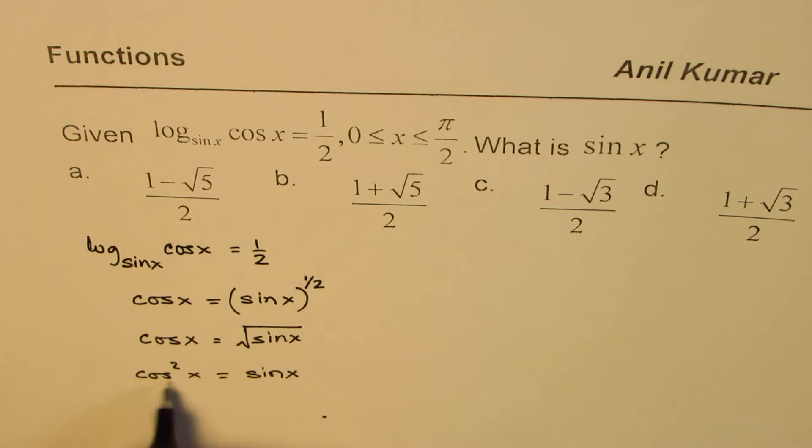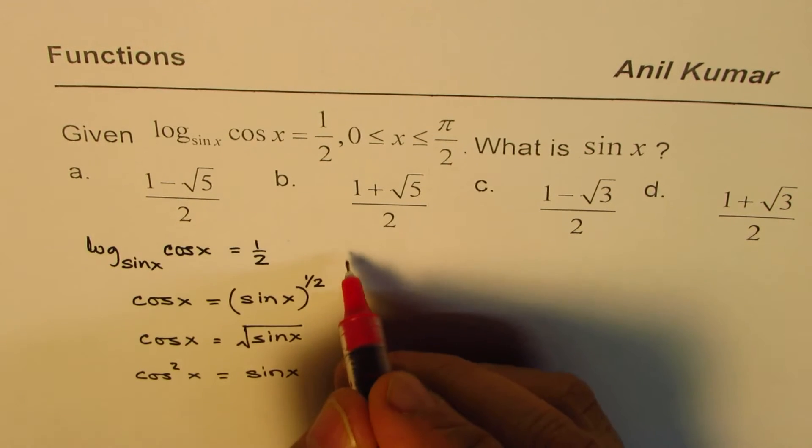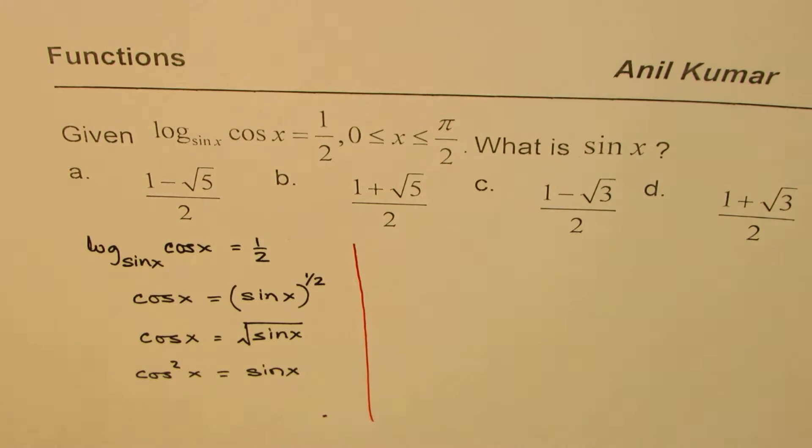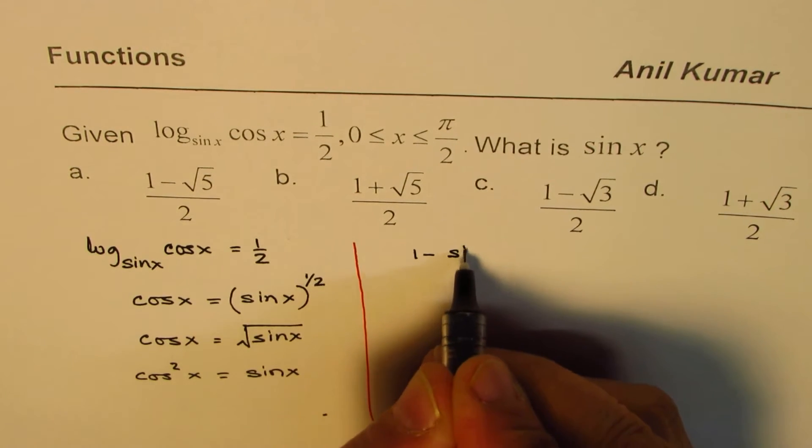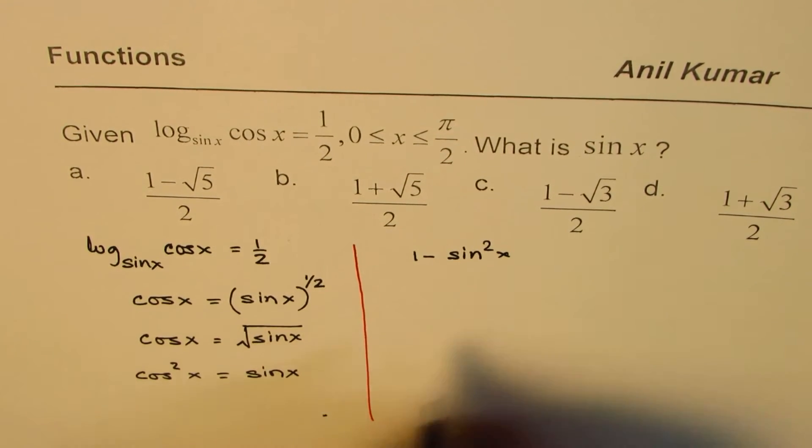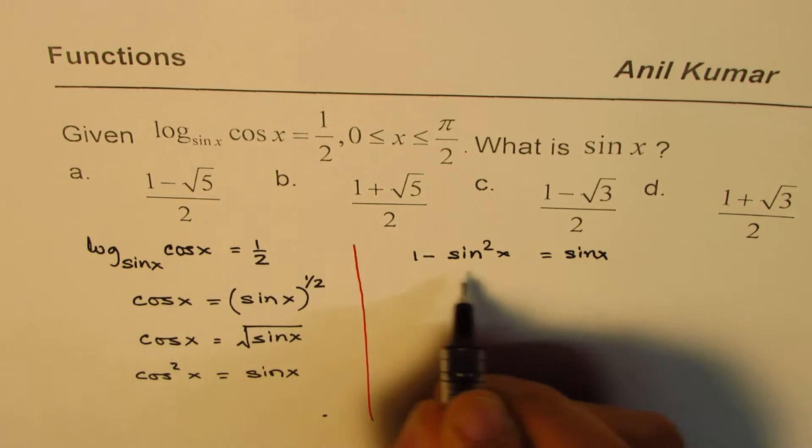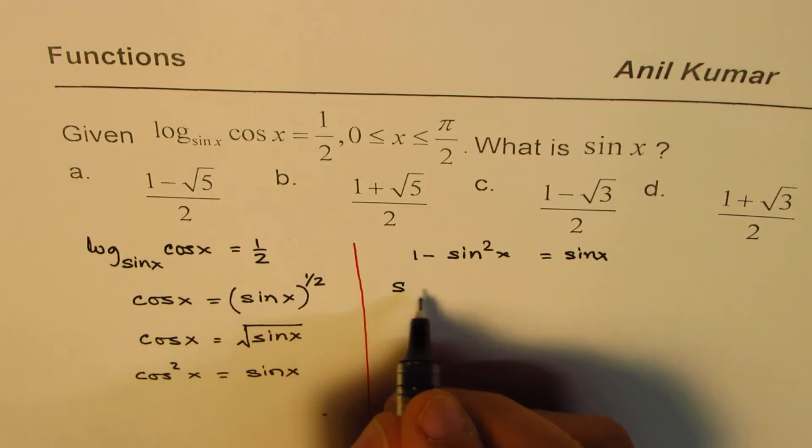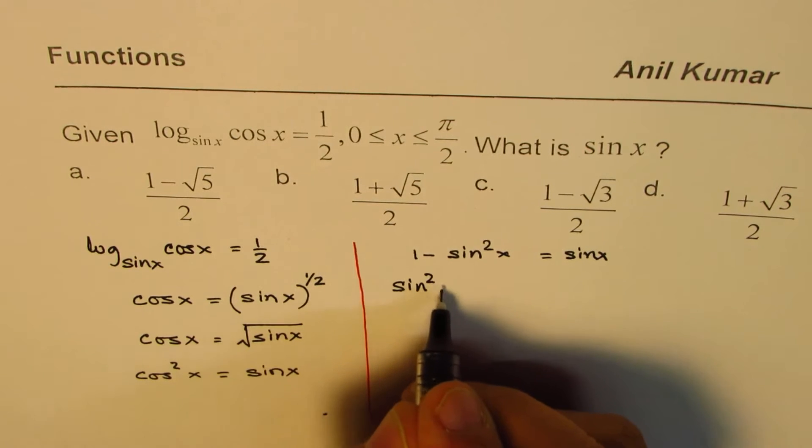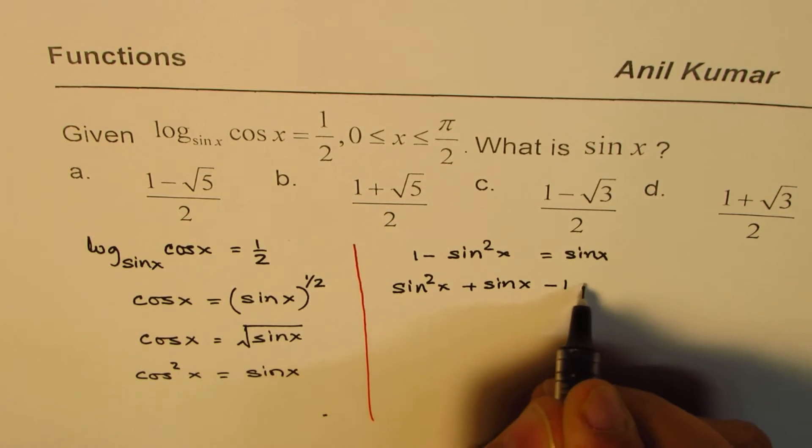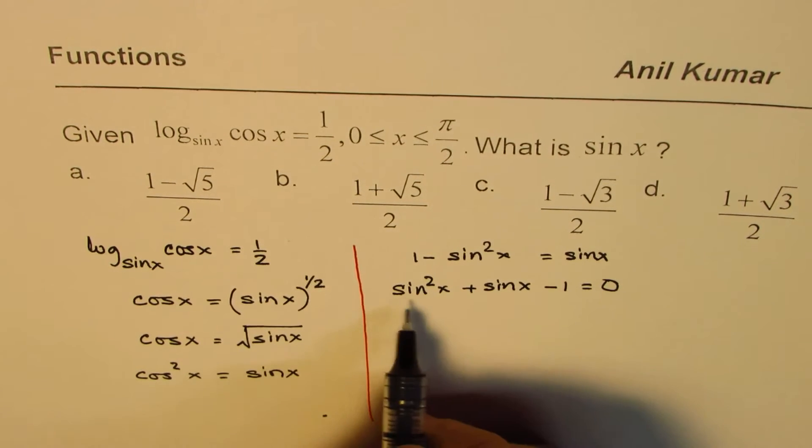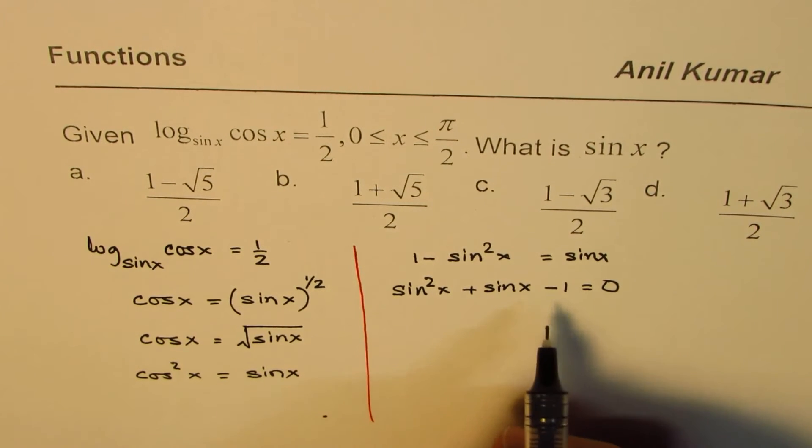If I write cos squared x as 1 minus sine squared x, I'll get a quadratic equation in sine x. So 1 minus sine squared x equals sine x. Bringing all the terms together, we get sine squared x plus sine x minus 1 equals 0.